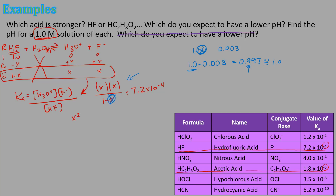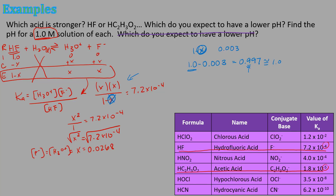With X dropped from the denominator, we have X² / 1 = 7.2 × 10⁻⁴, so X² = 7.2 × 10⁻⁴. Taking the square root gives X = 0.0268. Since X equals the hydronium concentration, pH = −log(0.0268) = 1.57. That's the pH of 1 M HF.